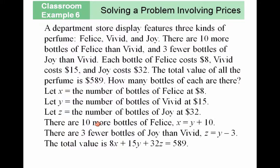I'm just going to read the question carefully and set up our equations. There are ten more bottles of Felice, so it would be X equals Y plus ten. That would be my first equation.